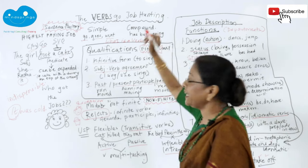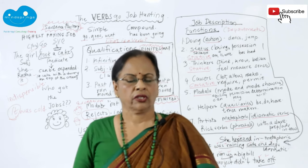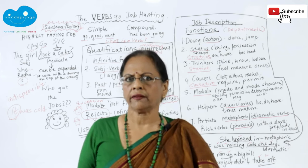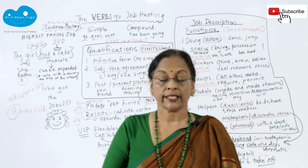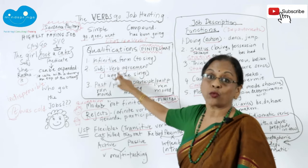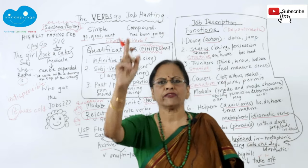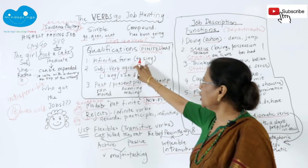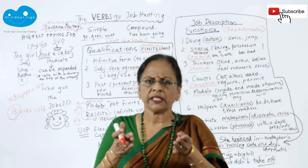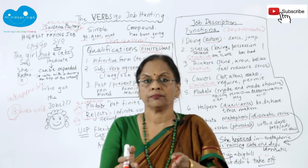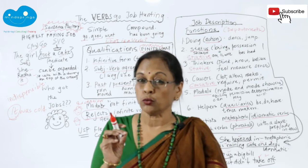They decided to call this bundle of qualifications 'finite verbs.' Finite because there are certain restrictions — a verb must stay within certain boundaries, like a soldier. The first requirement: they must have an infinitive form — you should be able to say 'to' plus that verb. To sing, to dance, to jump, to be, to do, to have — all these are infinitives, the basic form of a verb.